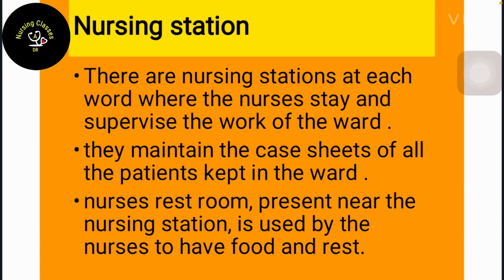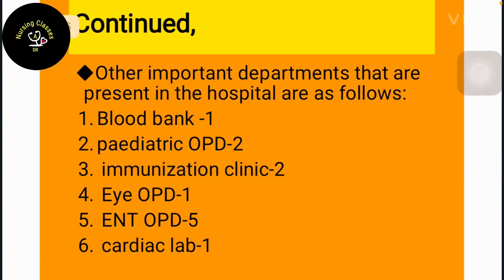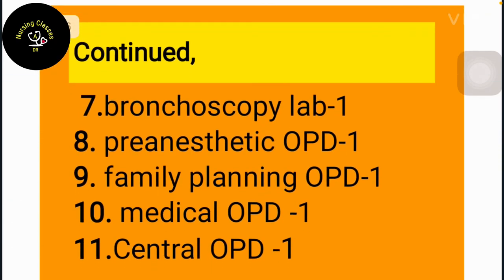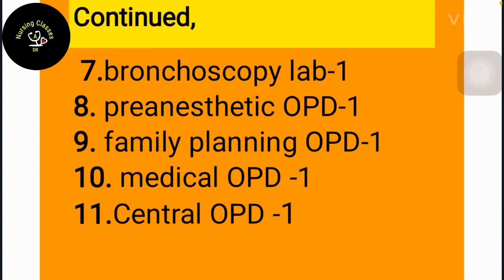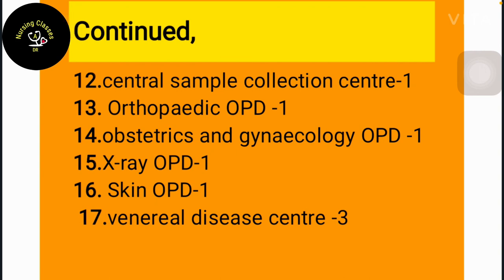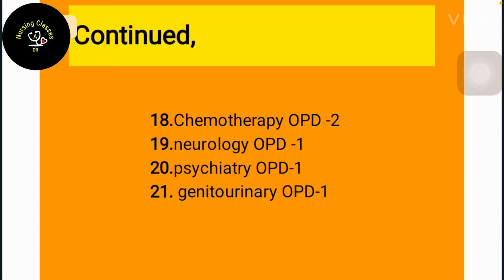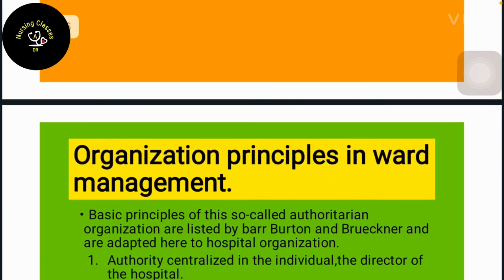Other important departments present in the hospital include: blood bank, pediatric OPD, immunization clinic, eye OPD, ENT OPD, cardiac lab, bronchoscopy lab, prenatal OPD, family planning OPD, medical OPD, central OPD, central sample collection center, orthopedic OPD, obstetric and gynecology OPD, X-ray OPD, skin OPD, venereal disease centers, chemotherapy OPD, neurology OPD, psychiatric OPD, and urinary OPD.